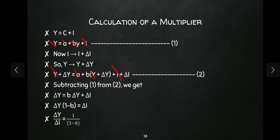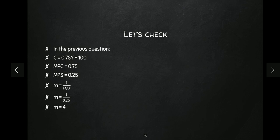Now, b is the marginal propensity to consume, so (1 − b) is the marginal propensity to save. Therefore, the value of the investment multiplier is 1 / MPS — one divided by marginal propensity to save. For example, if MPC = 0.8, then MPS = 0.2, and 1 / 0.2 = 5. So the investment multiplier is 5. Let's cross-check with our previous question where C = 0.75Y + 100, so MPC = 0.75 and MPS = 0.25.